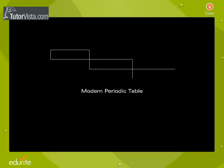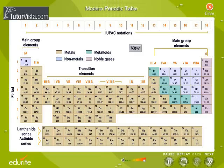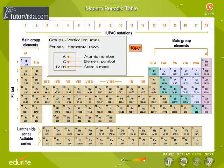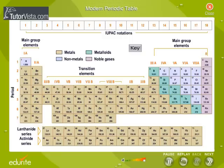The modern periodic table is the most important chemistry reference there is. In a periodic table, the elements are arranged in an informative array. The basis of the modern periodic table is the atomic number, and elements are arranged in the increasing order of their atomic numbers.